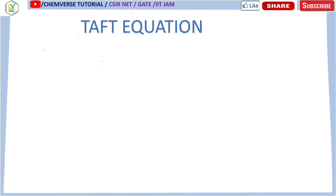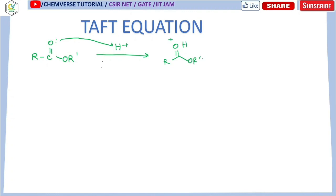Suppose I take a compound A* which is RCO₂R', and I am performing hydrolysis in two mediums — one is acid medium and another is basic medium. First, adding acid: the hydrolysis takes place in acidic medium. Initially you get a protonated intermediate with OR' and OH⁺. In the next step, a water molecule adds, producing OH, OH₂⁺, then OR'. Then H⁺ is removed.